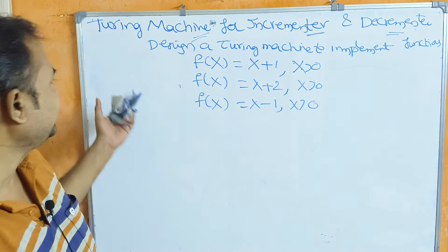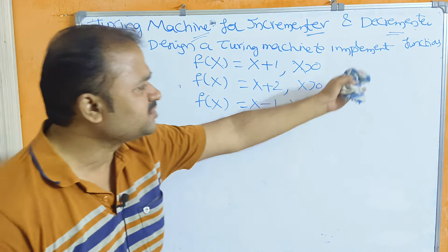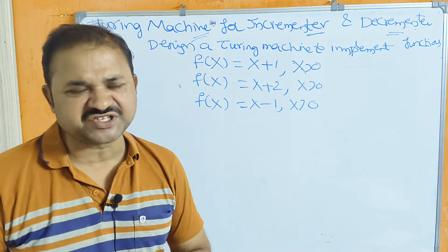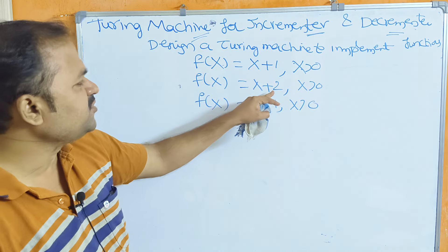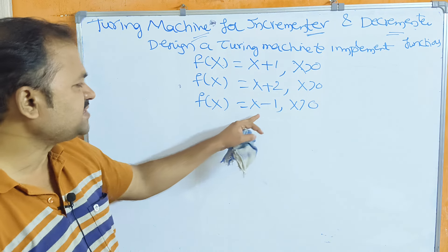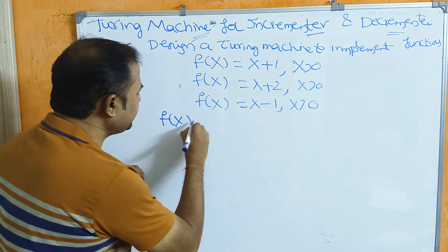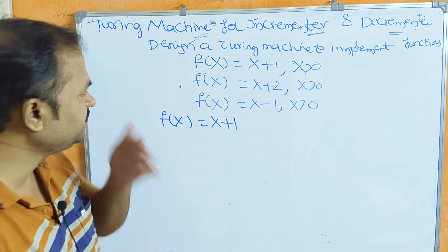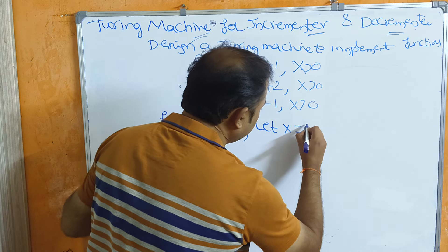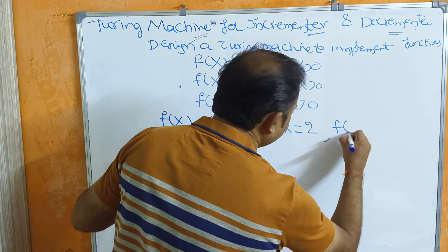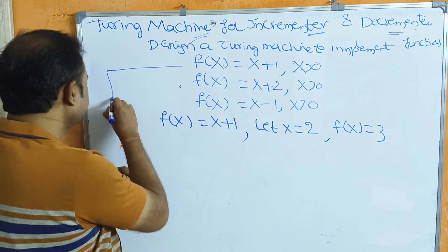Let's discuss this problem: design a Turing machine for an incrementer and decrementer, or design a Turing machine to implement the functions f(x) = x+1 where x > 0, f(x) = x+2 where x > 0, and f(x) = x-1 where x > 0. Let's look at the first one: f(x) = x+1. The incrementer means we increment the given value by one. Suppose x = 2, then f(x) = 2+1 = 3. That is our output.